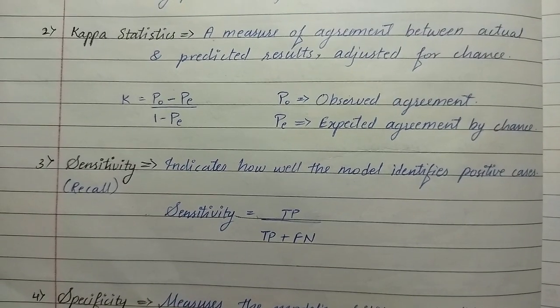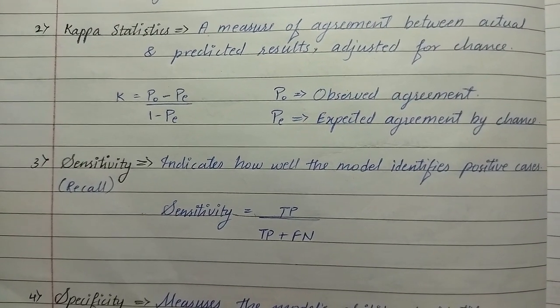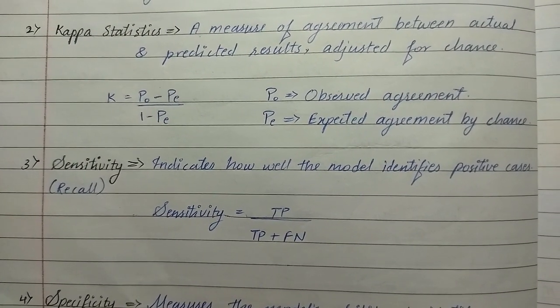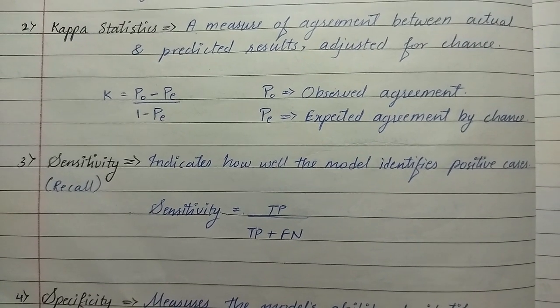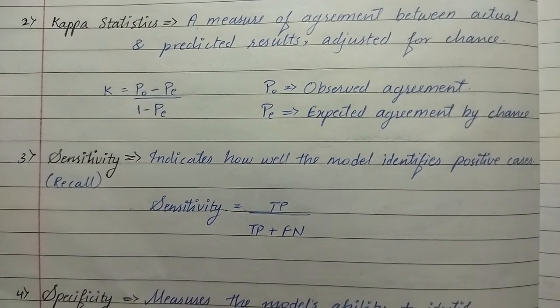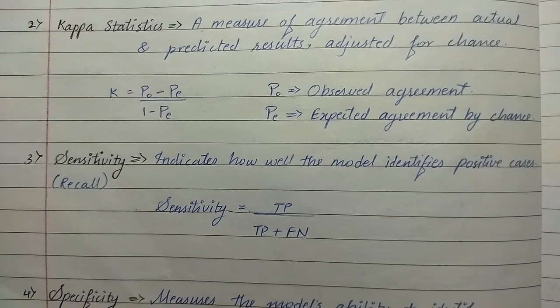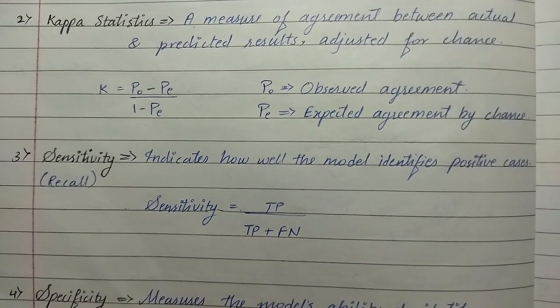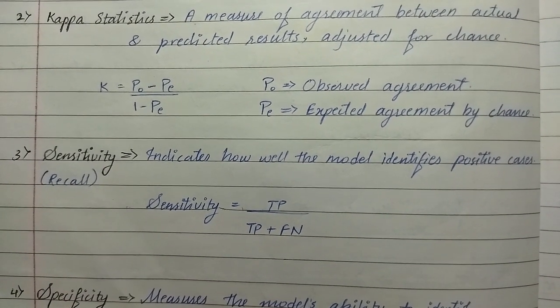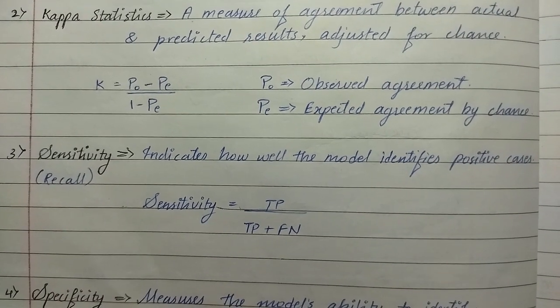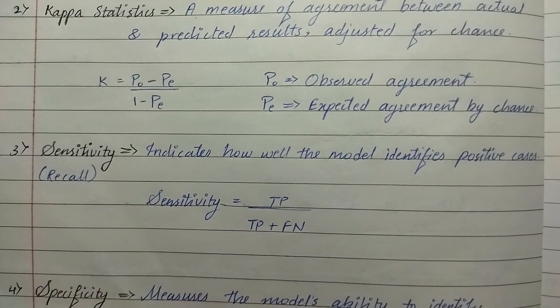The second matrix is kappa statistics, a measure of agreement between actual and predicted results adjusted for chance. K equals P0 minus PE upon 1 minus PE, where P0 represents observed agreement and PE is expected agreement by chance.